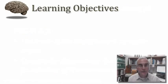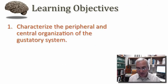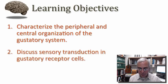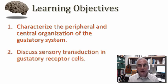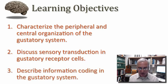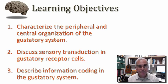My learning objectives for our discussion on gustation are: first, to characterize the peripheral and the central organization of the gustatory system; second, to focus on the issue of sensory transduction and understand how that occurs within our sensory neurons in our taste buds; and third, to be able to discuss the means by which information is coded within the gustatory system.